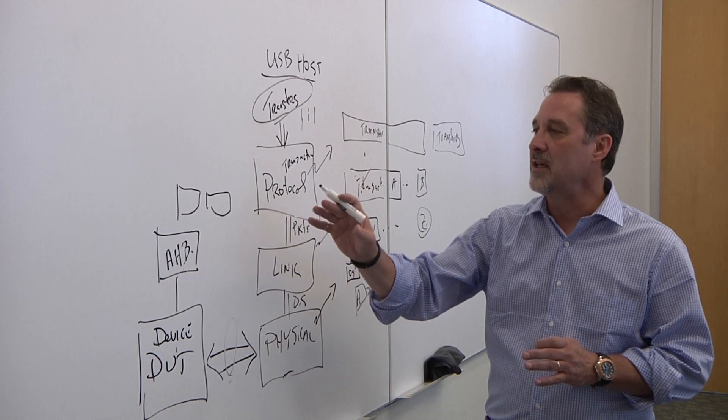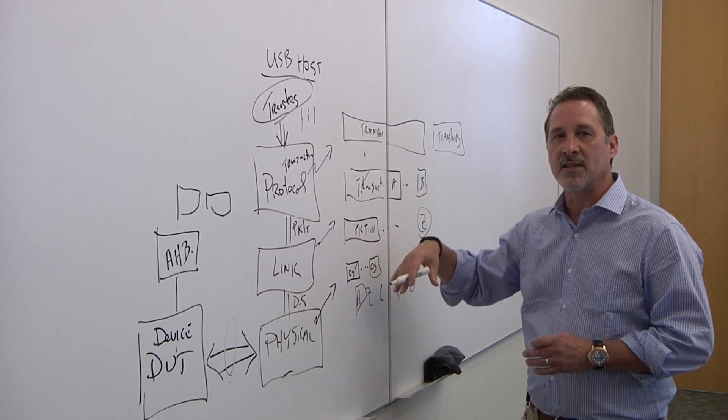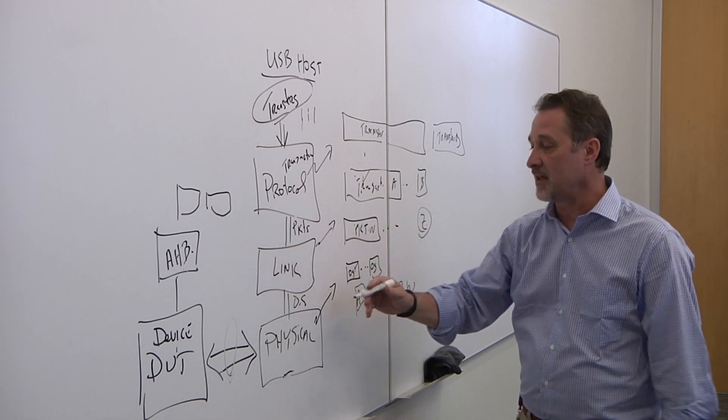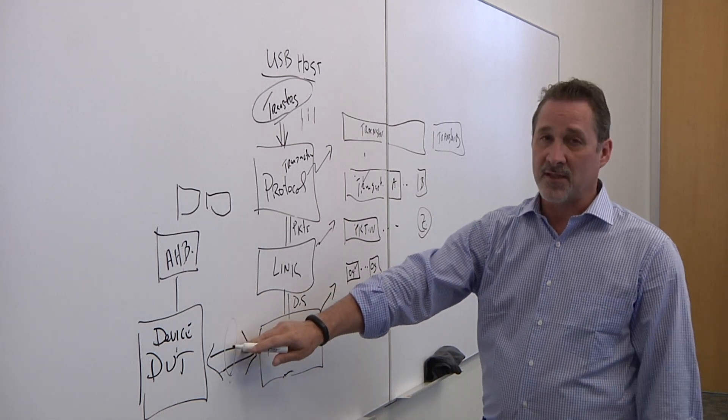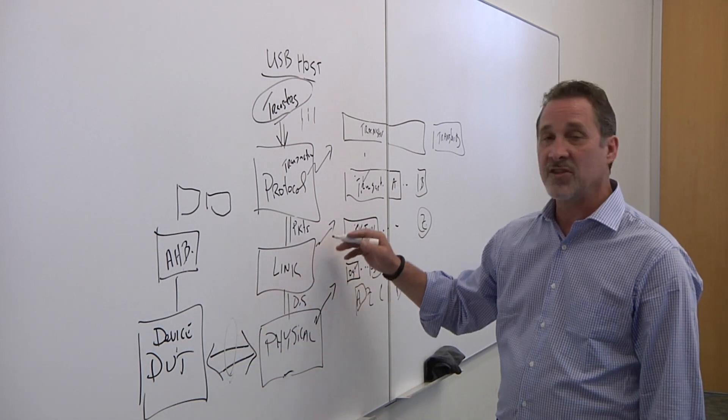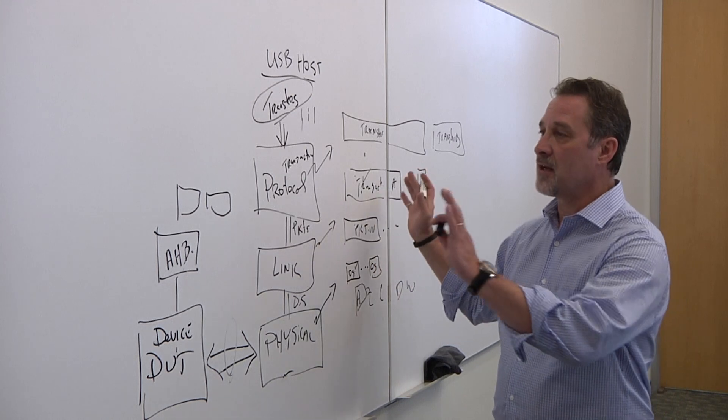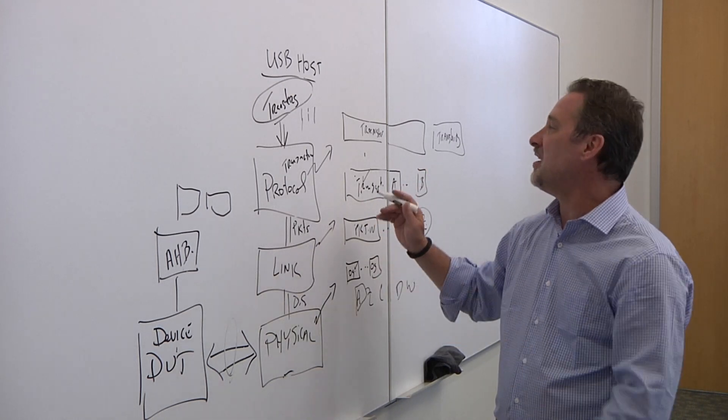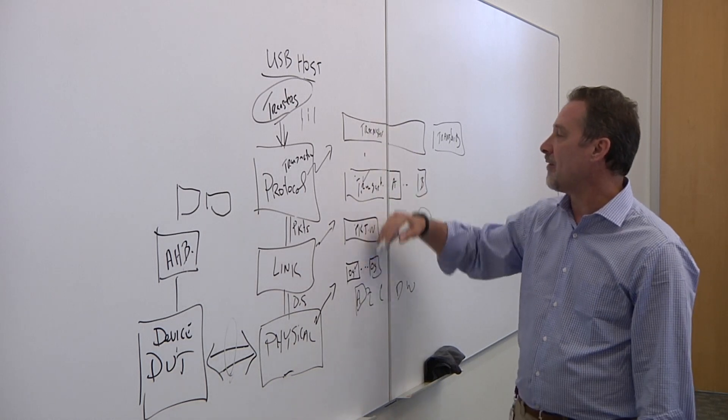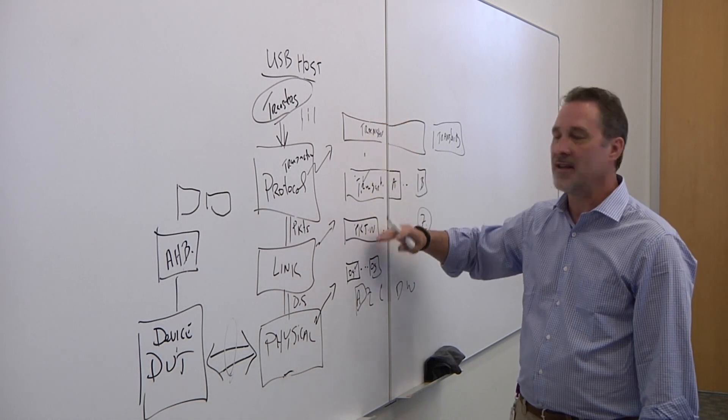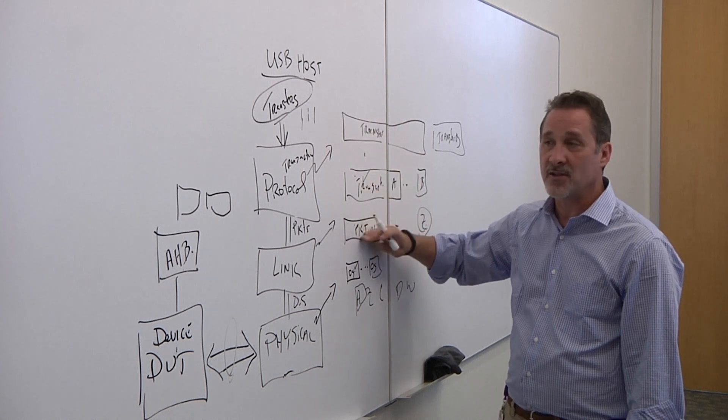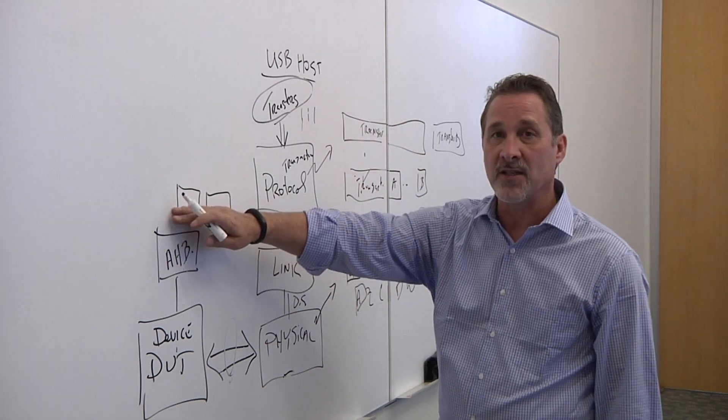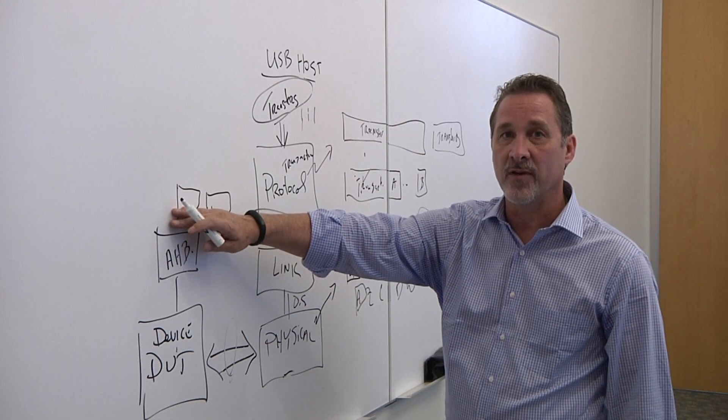What you really need is an environment that you can visualize things at the protocol level because that's the other key. If I was sitting down here doing things at the signal level or even with messages, understanding a complex environment just doesn't work anymore. You really need to have some sort of tools, some sort of graphical interface that allows you to see it in the terms that you're talking, transfers, transactions, and packets, or AXI transactions or AHB transactions over here.